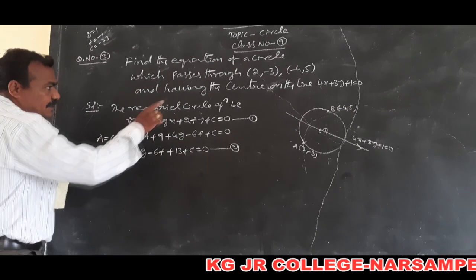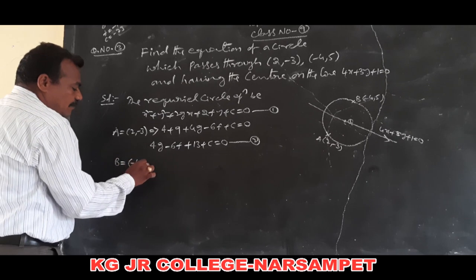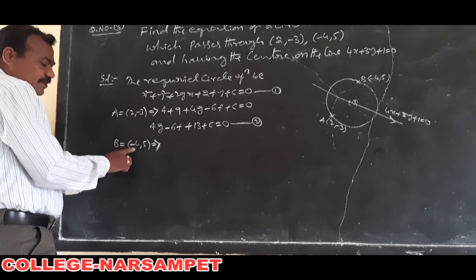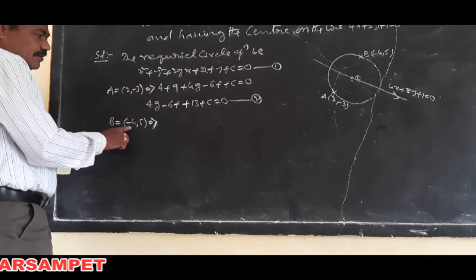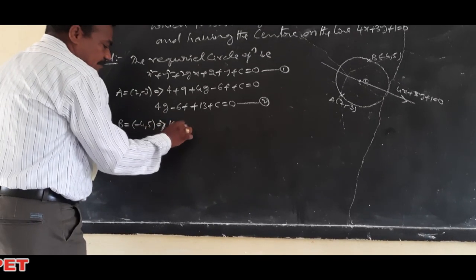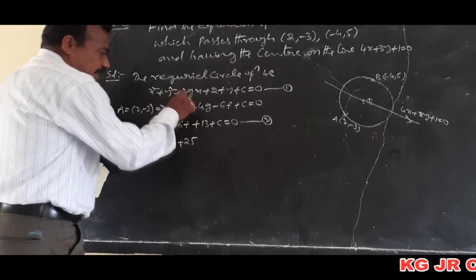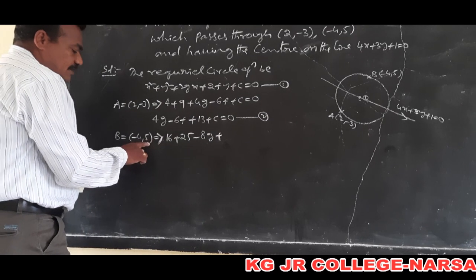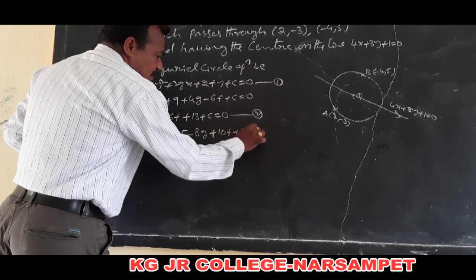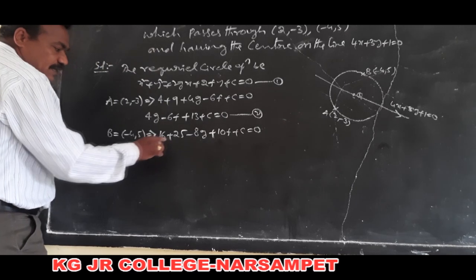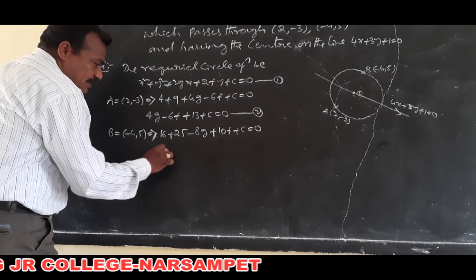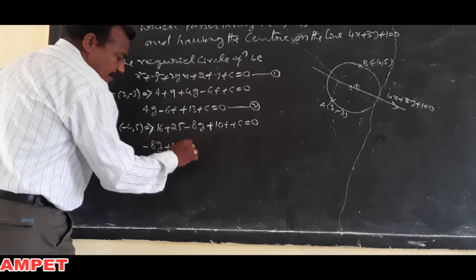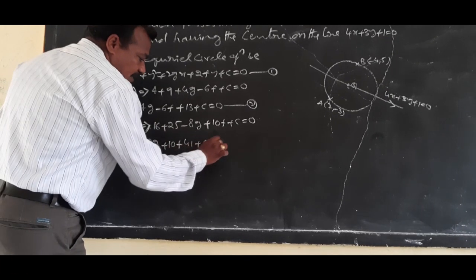The circle is also passing through the other point (-4, 5). In this circle equation, put x = -4 and y = 5. Here 16 + 25 = 41, and x = -4 gives -8g, y = 5 gives 10f. So -8g + 10f + c + 41 = 0. This is the second relation.